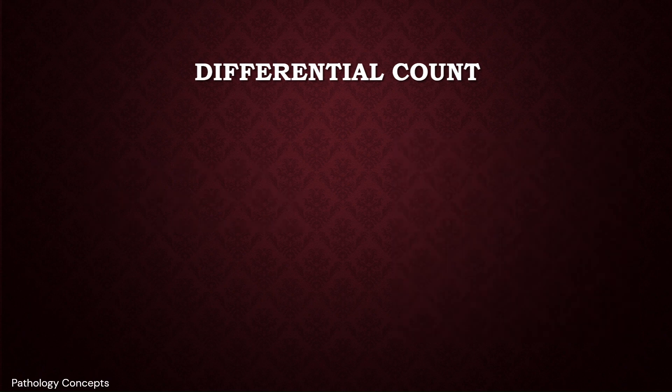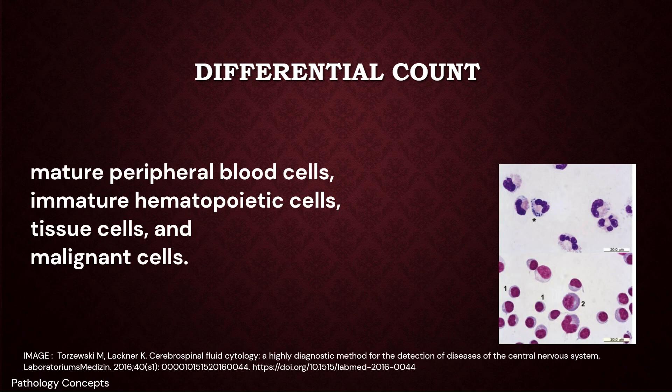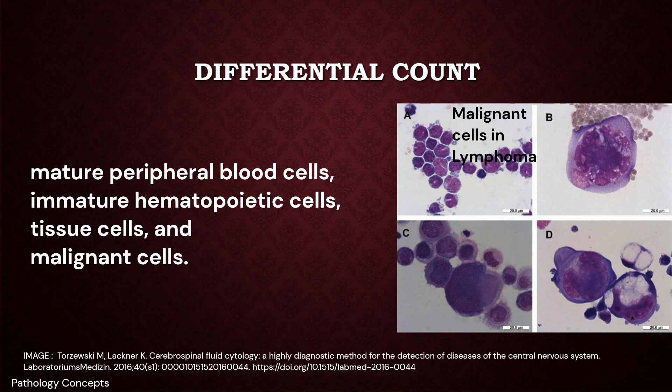Cells seen in CSF may be divided into four categories: mature peripheral blood cells, immature hematopoietic cells, tissue cells, and malignant cells.